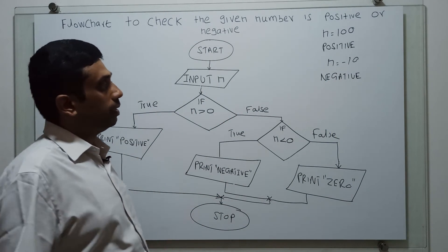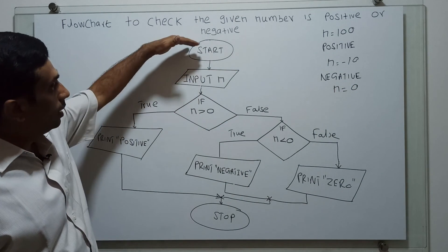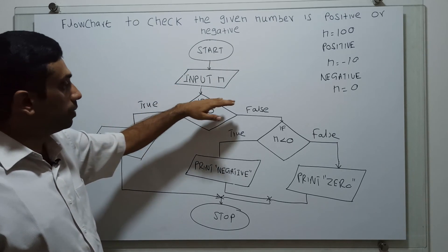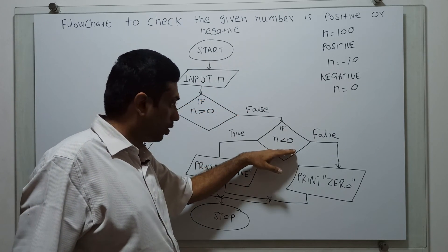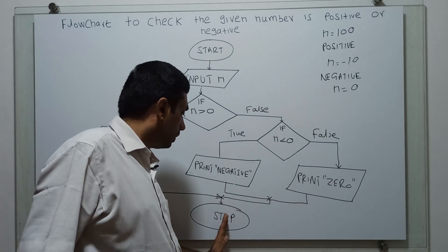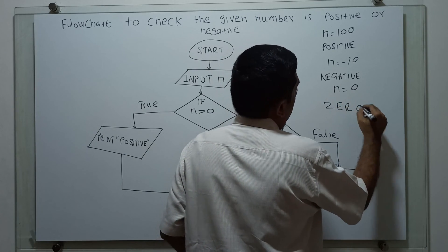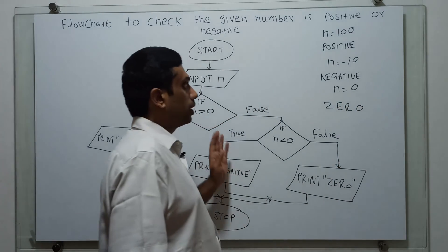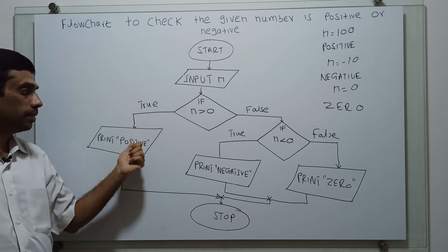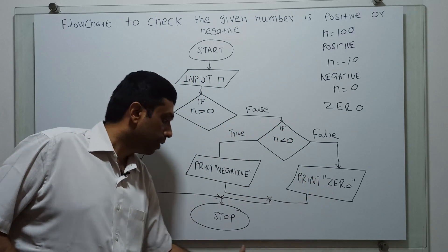In another case, I am giving n equal to 0. I am obtaining n — input n equal to 0. n greater than 0 is false, then we check n less than 0 — this is also false. Then we print 0 and it reaches the logical end of the flowchart. So the output is 0. Our flowchart is working perfectly: it checks whether the number is positive, negative, or 0, and gives an appropriate result.